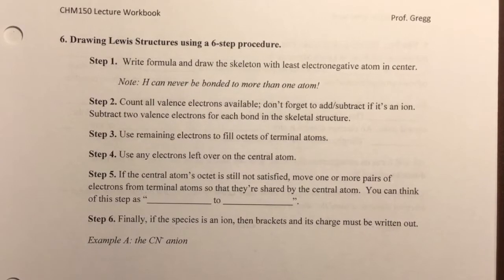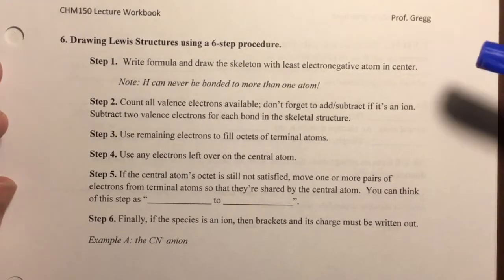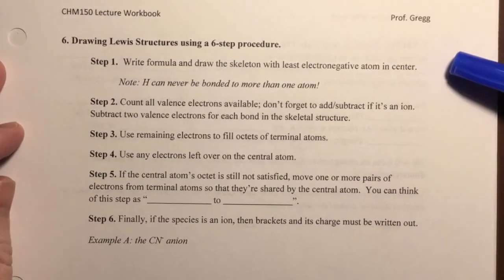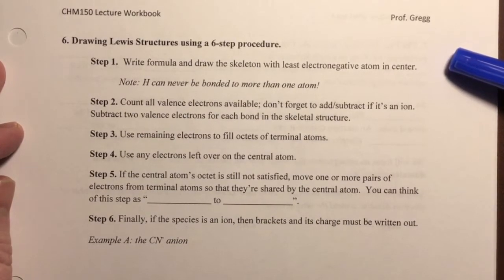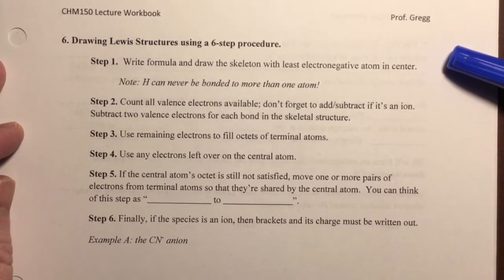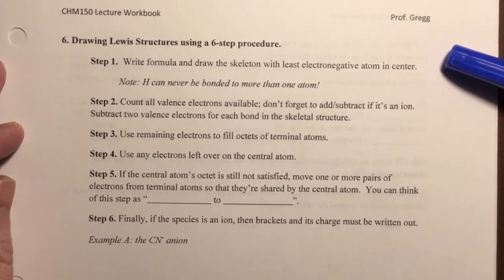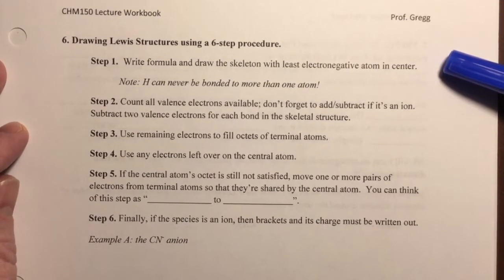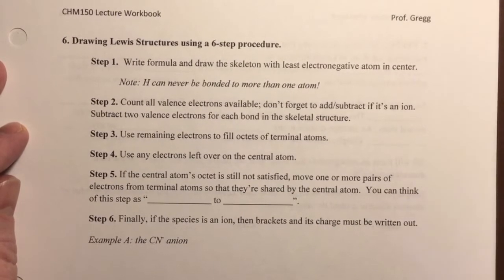Welcome back everyone. In previous videos I've shown you Lewis structures of various compounds, just to remind you what they look like. In those covalent compounds we had shared valence electrons represented as a straight line, and unshared electrons represented as dots. In this video we're going to review the method by which we generate a Lewis structure.